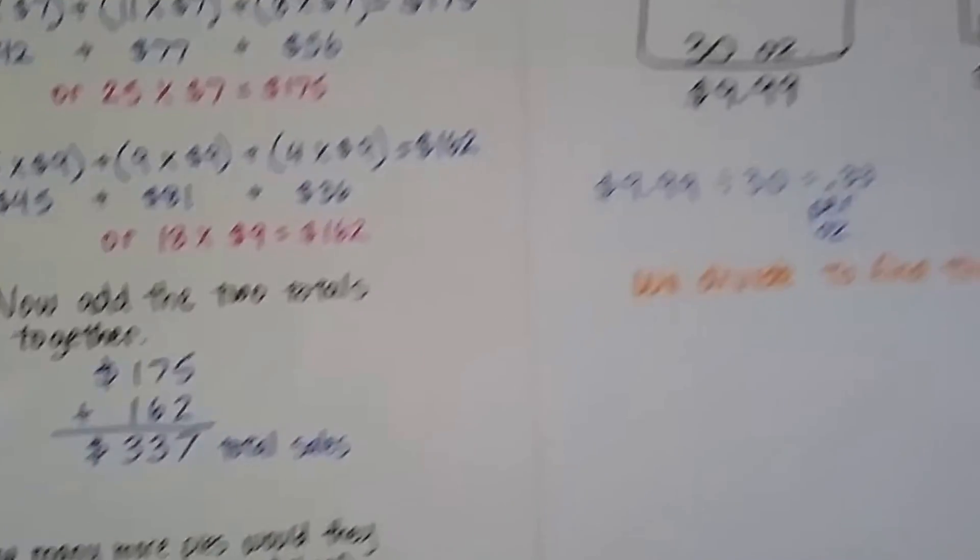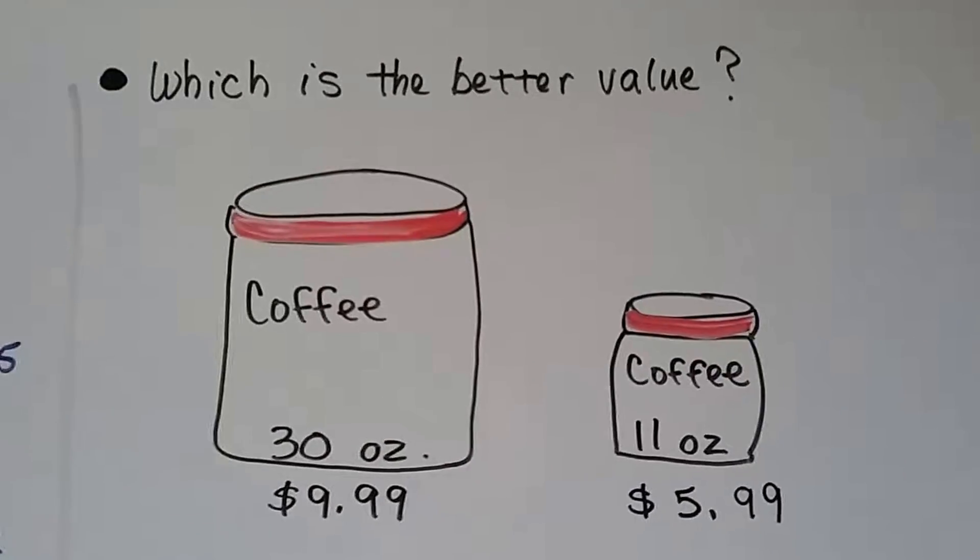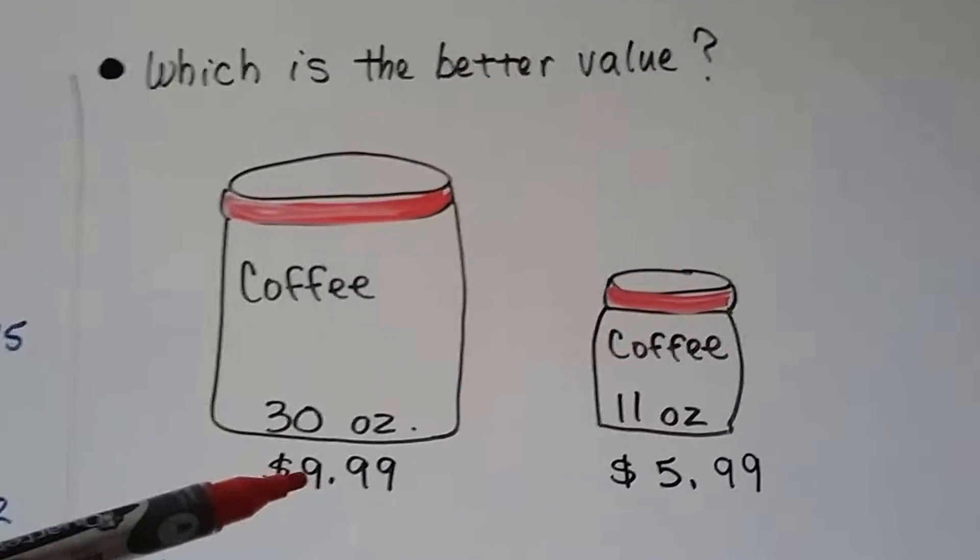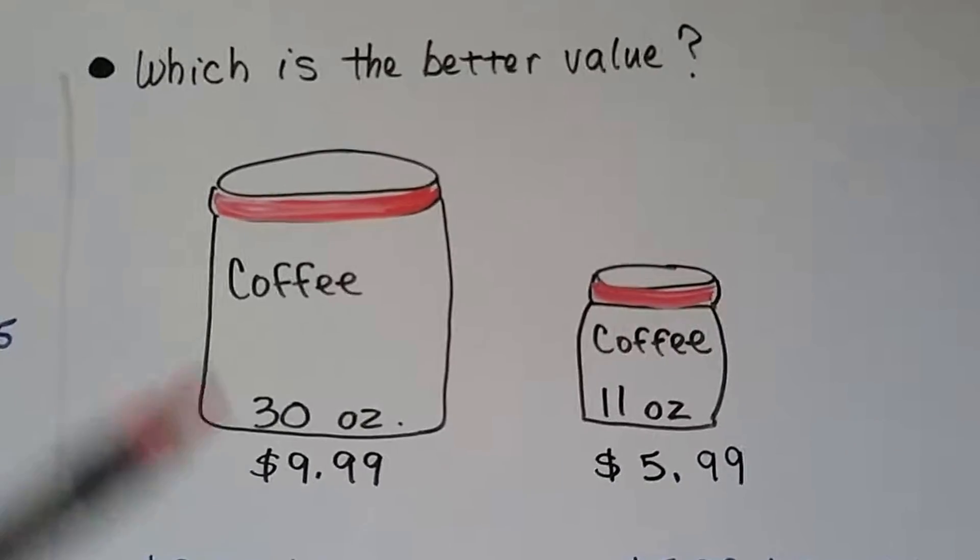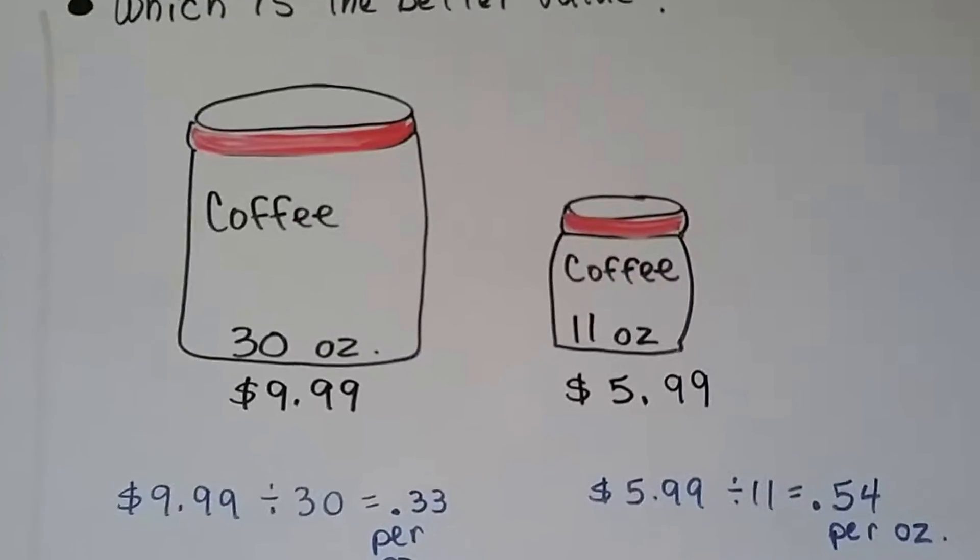Sometimes, we're at the grocery store, and we have to do multi-step problems. There's two cans of coffee, which is the better value? We have a 30-ounce can for $9.99, and we have an 11-ounce can for $5.99. Actually, these are real prices for Maxwell House that I looked up. Which is the better deal?